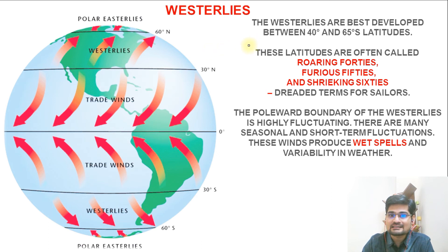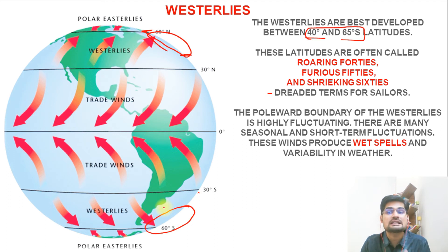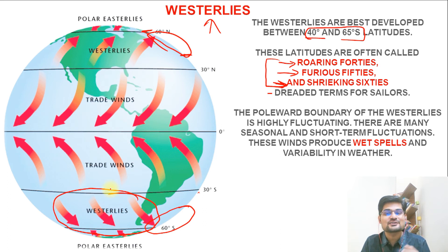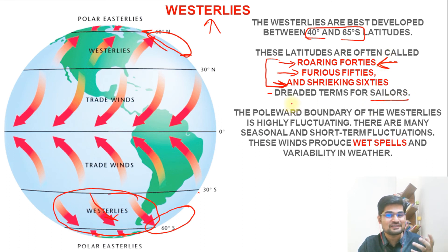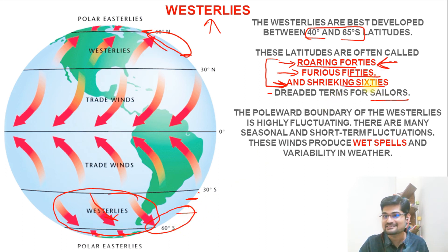The westerlies are best developed between 40° and 65° latitude. This zone has three famous names: roaring 40s, furious 50s, and shrieking 60s — especially in the southern hemisphere where these winds are so powerful. These names were given by sailors who were very much afraid of these winds because of their great force. At 40° latitude they are roaring, at 50° they are furious, and at 60° they are shrieking.